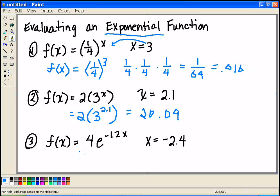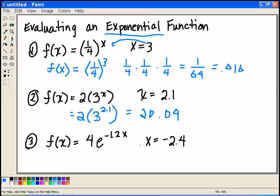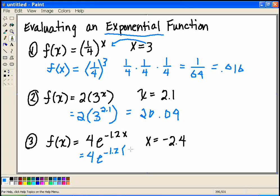And here we do something similar in this last example. Here we want to evaluate this function when x equals negative 2.4. So I can say equals 4e to the minus 1.2 times a minus 2.4.